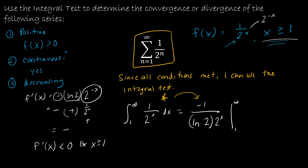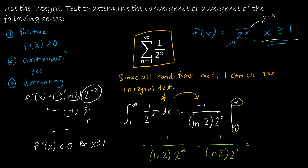Plugging in the limits: as x → ∞, 2ˣ → ∞ so −1/(ln(2) · 2ˣ) → 0. At x = 1, we get −1/(ln(2) · 2). So the result is 0 − (−1/(2 ln 2)), which equals 1/(2 ln 2). The integral converges to a finite value.